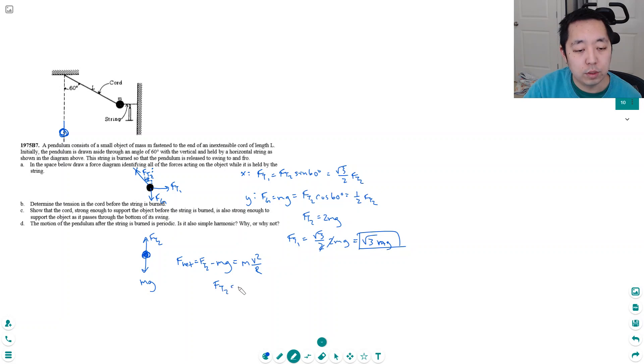So FT2 would equal mg plus m v squared over r, where r is the radius, in this case they use the letter l. I don't know how this compares to 2 mg because I need to know how fast it's swinging down here. This is a partial solution, but I need to solve for v. The way I do that is after I cut the string, it has potential energy that's converted into kinetic energy.